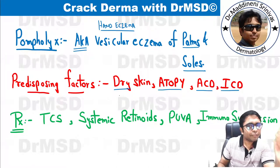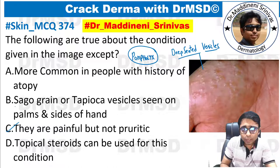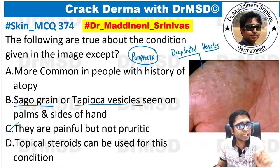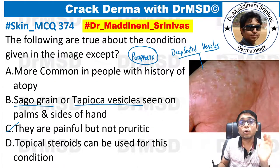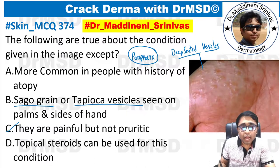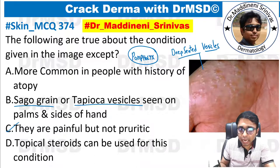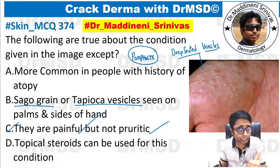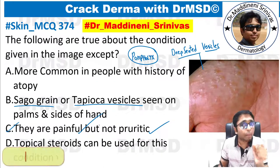Clinically, we can see these sago-grain or tapioca-like vesicular lesions — deep-seated vesicles present over the palms and also over the soles. The important point about these lesions is that they are pruritic and also painful. The patient will have both itching and extreme tenderness when we try to palpate these lesions.